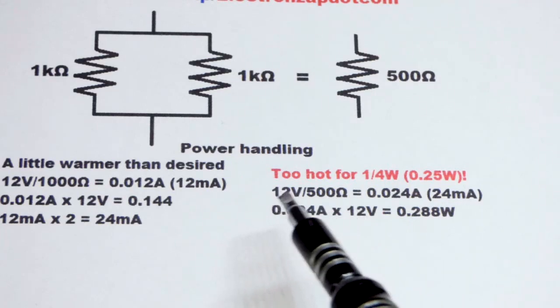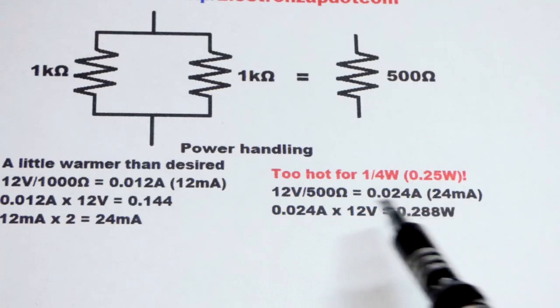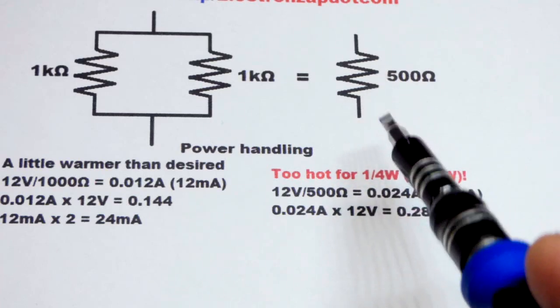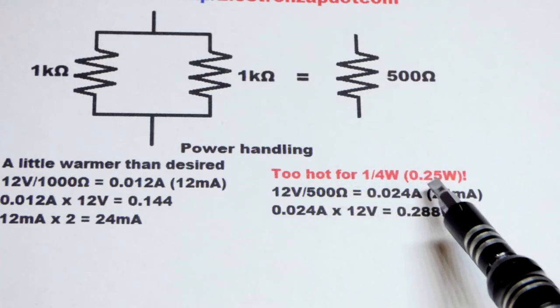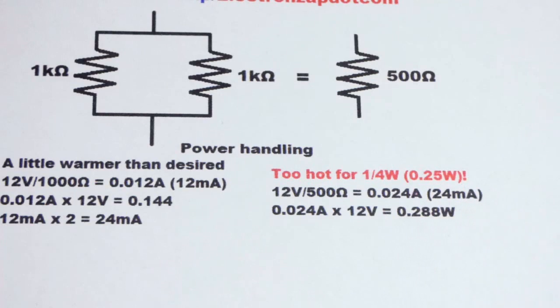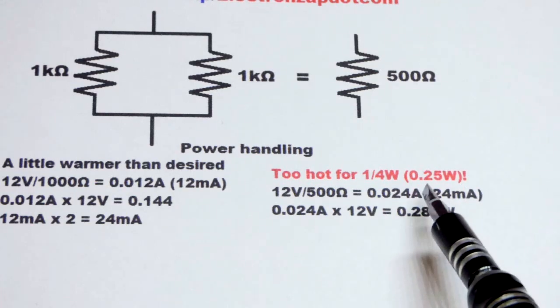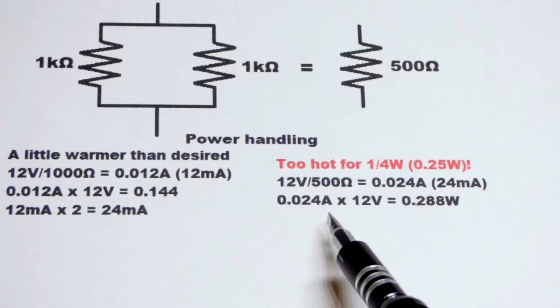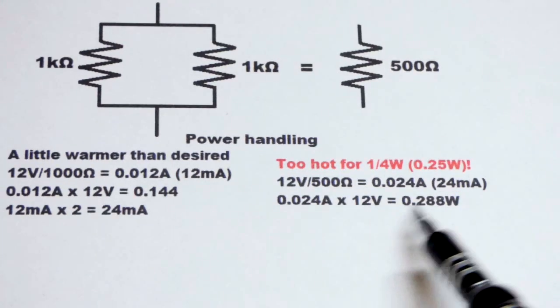Let's say for whatever reason you want to use a resistor to get 24 milliamps from 12 volts. As you can see here, a quarter watt resistor will get too hot. It's only rated for a maximum of 0.25 watts. You should still keep it under 0.125 watts if possible. And here you can see the math, the current going through it.